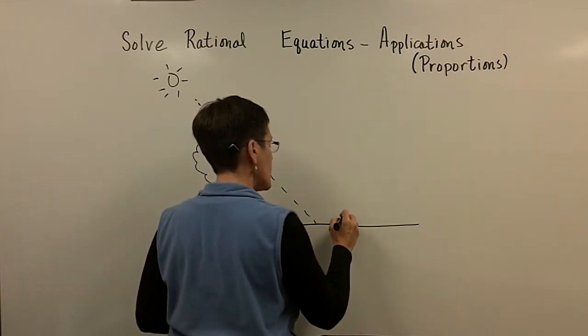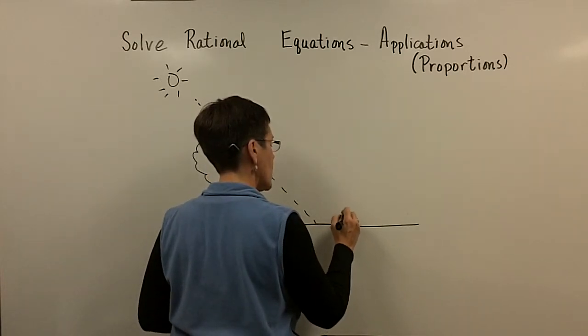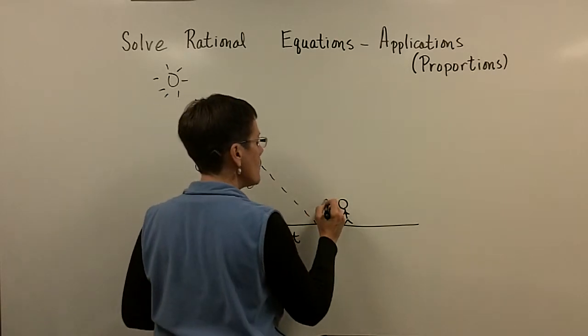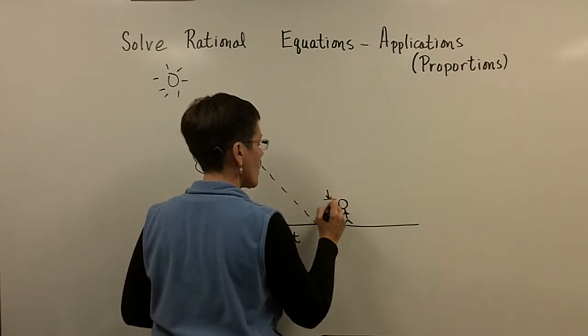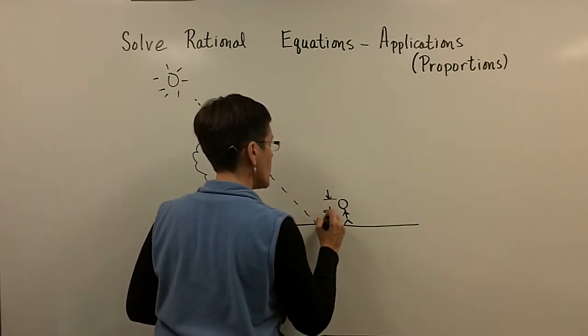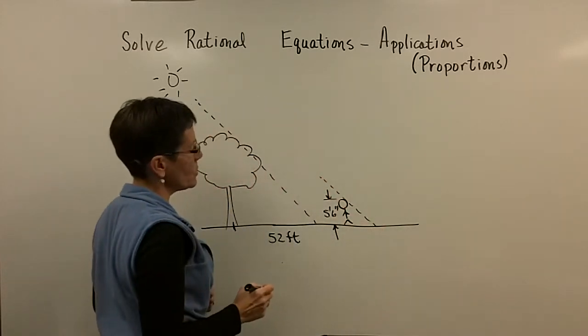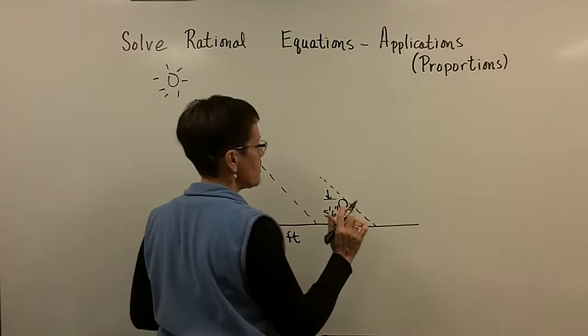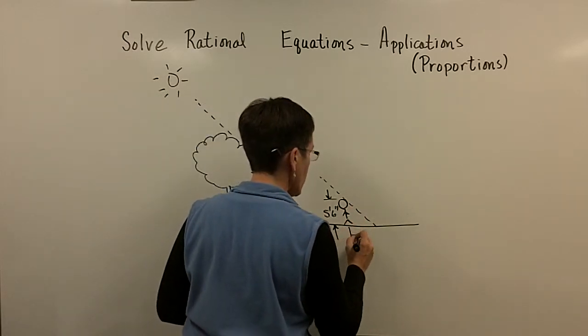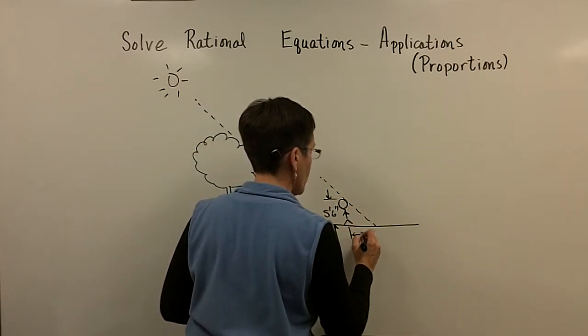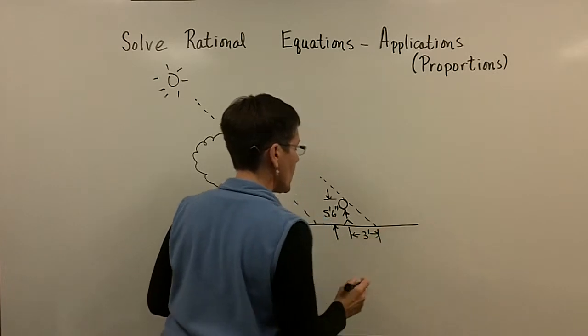Well, I have somebody out there standing. They're helping me out. And that person is five foot, six inches tall. And that person's shadow, these are similar triangles because they're side by side, but not in each other's shadow. And let's have that person's shadow be three feet in length.